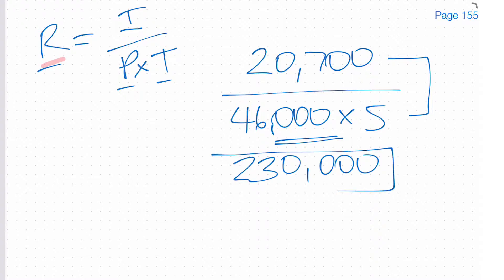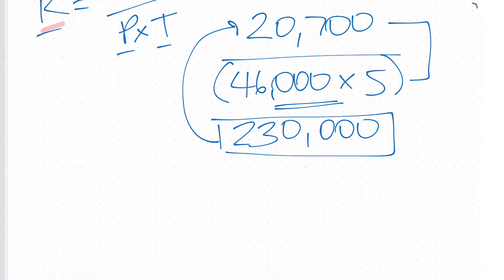Now that we have this number given that we've done this calculation here, now we can divide that number into the interest or the $20,700 on the top. Alright so when we do that, let's have a look over here and make some space, we're going to end up with 0.09.